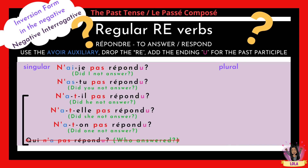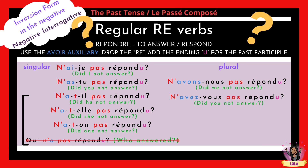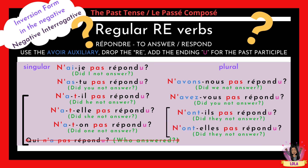N'as-tu pas répondu, n'a-t-il pas répondu, n'a-t-elle pas répondu, n'a-t-on pas répondu. On the plural side: n'avons-nous pas répondu, n'avez-vous pas répondu, n'ont-ils pas répondu, and n'ont-elles pas répondu.